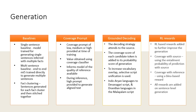This value was obtained using a coverage classifier, and this informs the model of the quality of reference available. During inference, a prompt of high was always provided to generate text that aligns highly with the reference. Next, a grounded decoding strategy that attends to the source was used. In this, the coverage score of each candidate token is added to its probability score of generation. To increase vocabulary overlap, selective script unification is used here, in which Indo-Aryan languages are represented using the Devanagari script and the Dravidian languages are represented using the Malayalam script. Finally, to further improve the quality of generation, RL-based rewards were used.